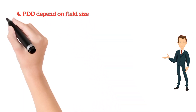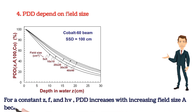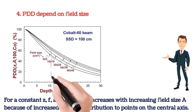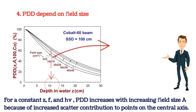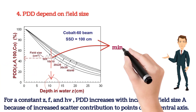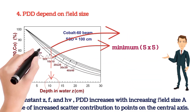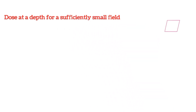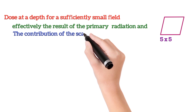We see how PDD depends on field size. For a constant SSD, depth, and energy, PDD increases with increasing field size because of increased scatter radiation contribution to the point on the central axis. At a constant depth, constant SSD, and constant beam energy, small field size has minimum PDD value. When we increase field size, PDD value increases, so for large field size, PDD value is maximum. If the field size is small, dose at a depth is a result of primary radiation only, and contribution of scattered photons is very less or negligible.